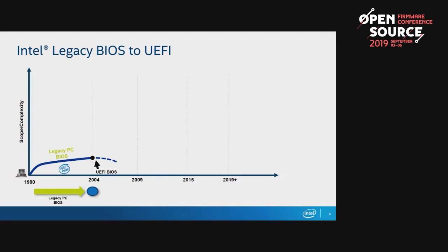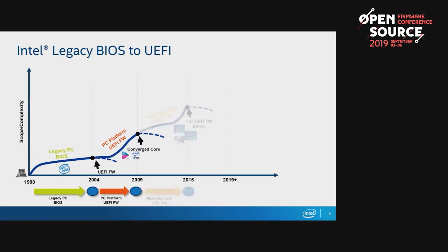The lineage of Intel firmware is a natural extension of the way we've moved from legacy BIOS into UEFI. Going back to legacy BIOS, which was 16-bit real mode code written in assembly, we realized that as computing systems became more complex that wouldn't scale. We needed to move to C code and a more robust interface — so UEFI enters the picture. In 2004, we start implementing the EFI, or original EDK code, compliant to the UEFI specification. At Intel, we start to move to a converged core, aligning product lines around that code.